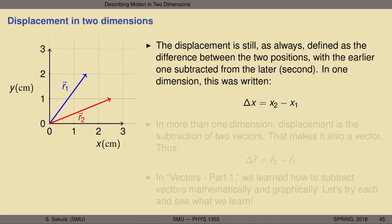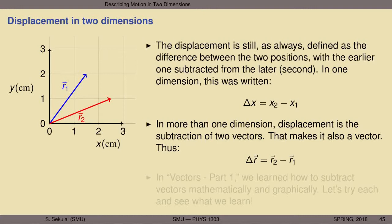In more than one dimension, the displacement is the subtraction of two vectors, and that makes the resulting object also a vector. Taking one vector and adding or subtracting it from another results in a vector. So the displacement in more than one dimension can be written as a vector — we will denote this as delta r vector — where the delta indicates difference. We compute r2 vector minus r1 vector.